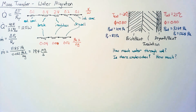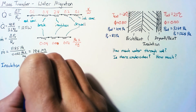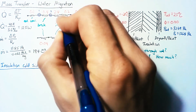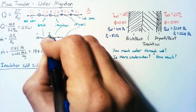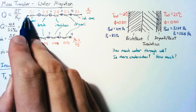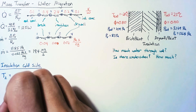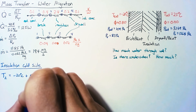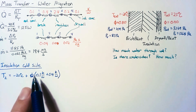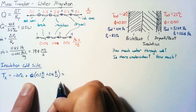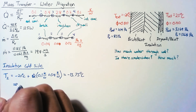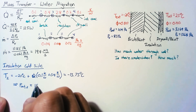The critical location is the cold side of the insulation, where the saturation pressure is lowest. We label each node for clarity. The temperature at node 2 — the cold side of the insulation — is calculated starting from the outside temperature of negative 20°C and adding Q-dot multiplied by the resistances passed through. With Q-dot of 12.5 W, we get a temperature of negative 13.75°C. Looking up the saturation pressure at this temperature gives us 187 Pa.